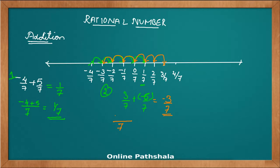Let's check that the same thing can be achieved through the simplified fraction method: 3 minus 6 gives us minus 3, and yes the answer is the same — minus 3 by 7. So the rule is very simple: if you want to add two rational numbers with the same denominator, just add up the numerators.